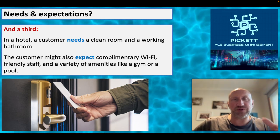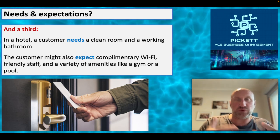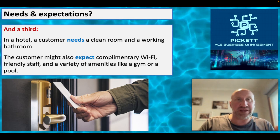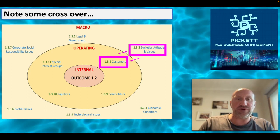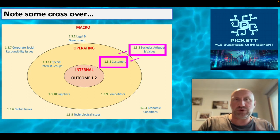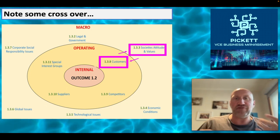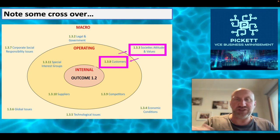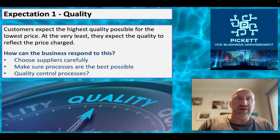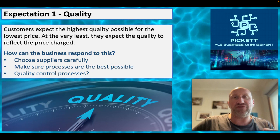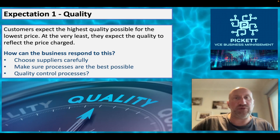Hopefully you can see the difference - customer needs are black and white, fundamental to what your business is selling. What we're really focusing on here are expectations. Just note some crossover: we already looked at society's attitudes and values, and since customers form part of society, there's inherently going to be some overlap between these two things. Now let's look at a range of typical expectations customers might have.